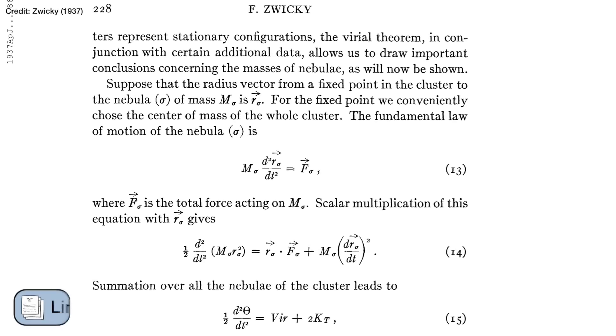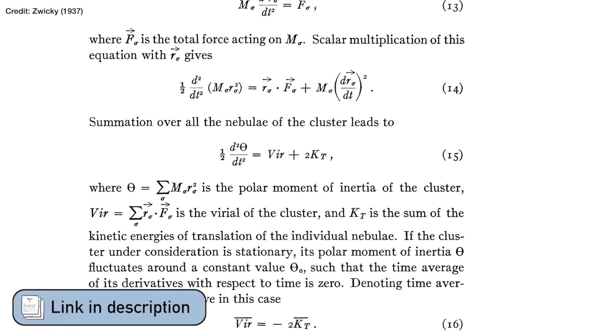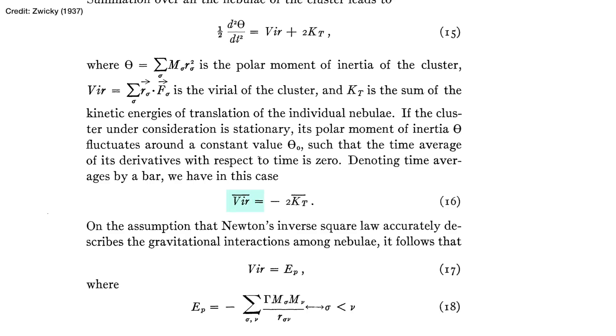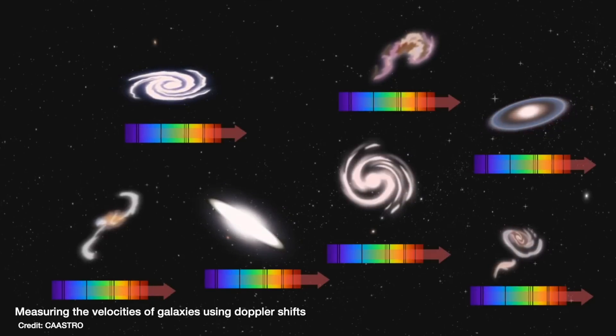Zwicky pointed out that if the galaxies are moving too fast, they have so much energy that gravity won't be strong enough to keep them bound together in the cluster. Running through the maths, you find that to be bound together, the total kinetic energy of the system has to be less than half of the gravitational energy. You can work out whether that is the case for galaxies in clusters by measuring the velocities of the individual galaxies using a simple Doppler shift of their light, and then measuring the size of the cluster to calculate how much mass must be there.